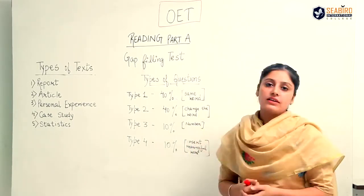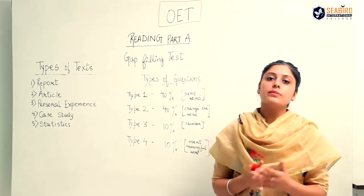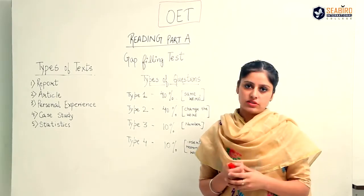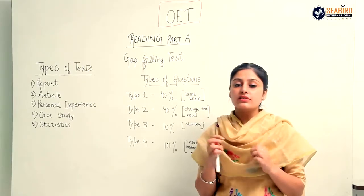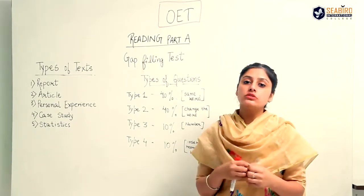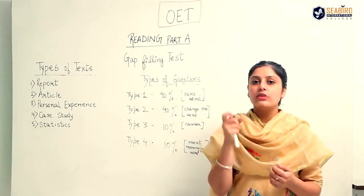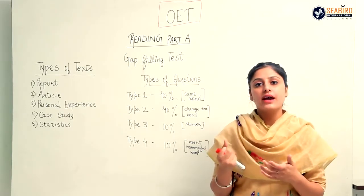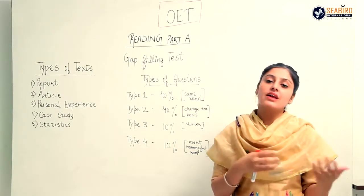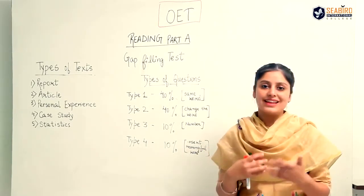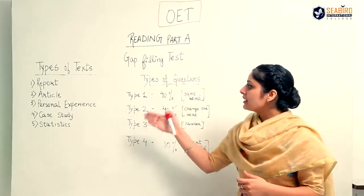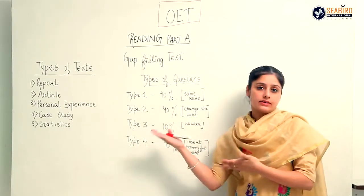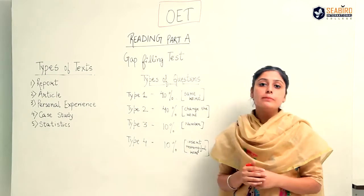Next is statistics. In statistics, there are basically graphs and tables with text. You have to search for numbers and the transformation of numbers into text. For example, 55% is 'just over half,' more than half; or less than half is 45% or 46% — like this. So these are the types of texts you might find in your reading part A.